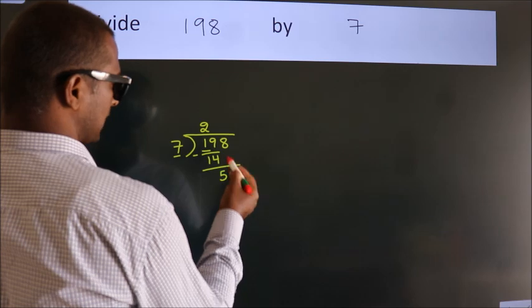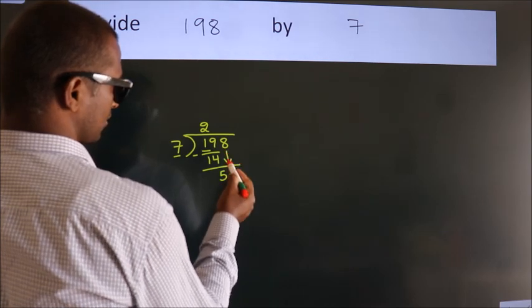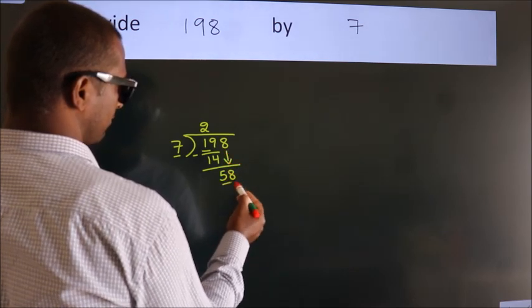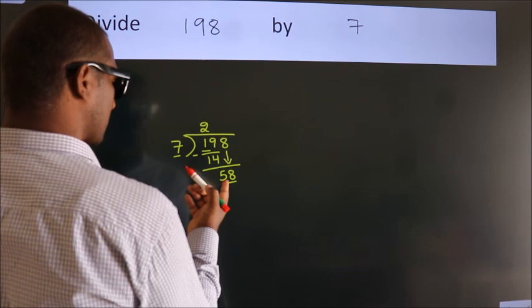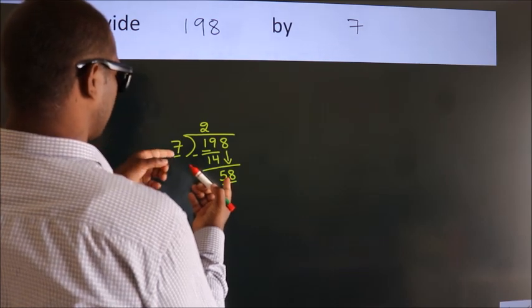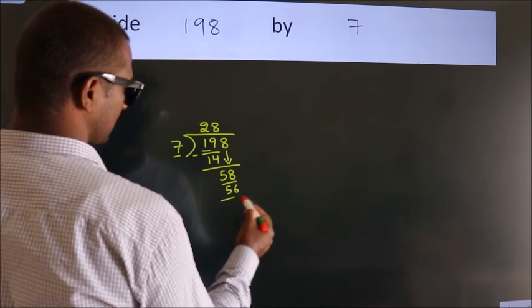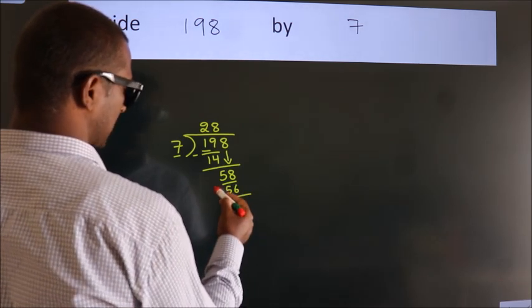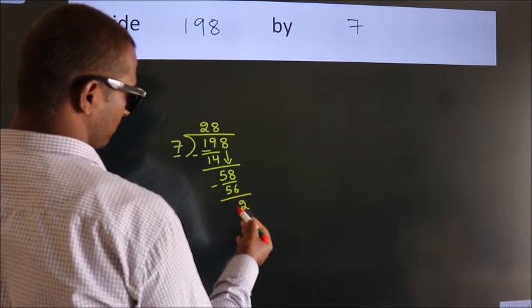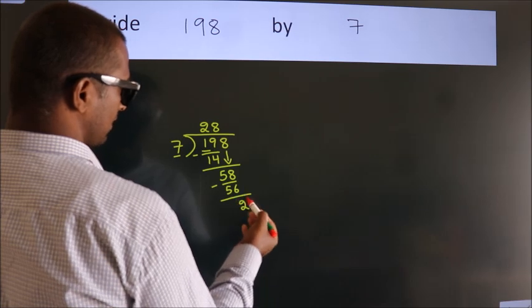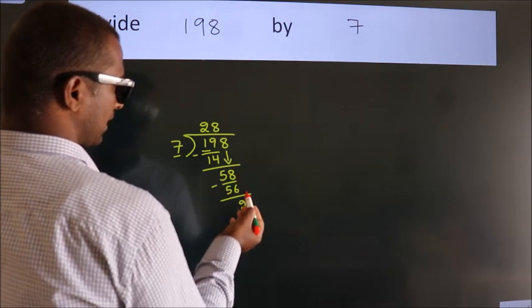After this, bring down the beside number, 8, so we have 58. A number close to 58 in the 7 table is 7×8=56. Now we subtract and get 2. After this, no more numbers to bring down.